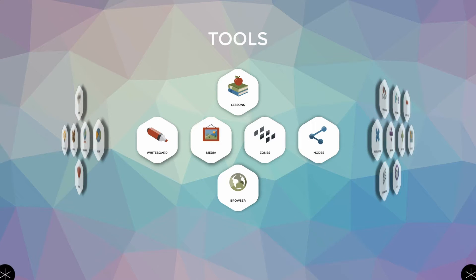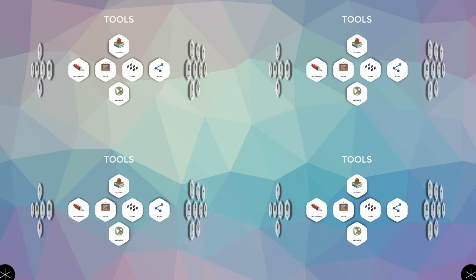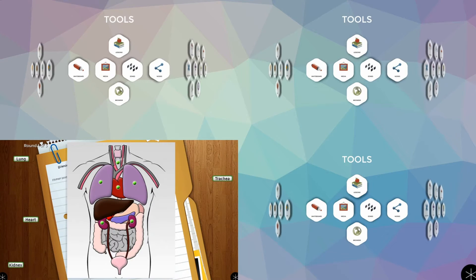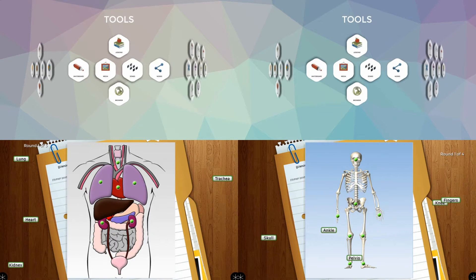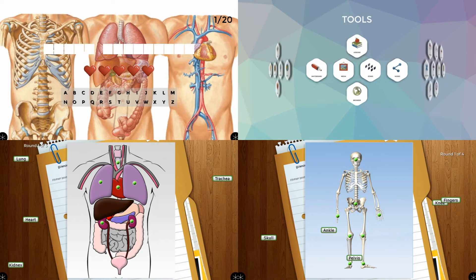In this example, the Zones feature is accessed through the Tools menu and used to divide the screen into sections. With the Organs and Bones apps running in the bottom sections and two previously downloaded lessons from the Multiteach Lessons community at the top.